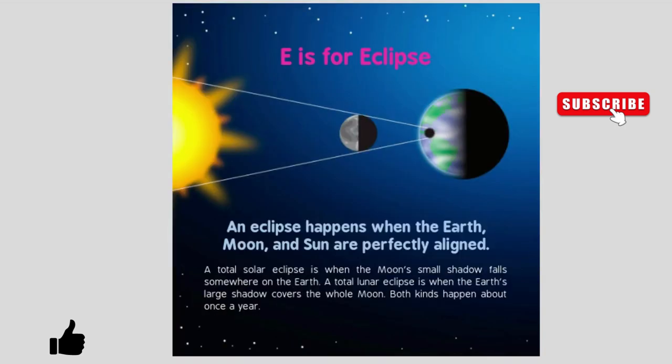E is for eclipse. An eclipse happens when the Earth, Moon, and Sun are perfectly aligned. A total solar eclipse is when the Moon's small shadow falls somewhere on the Earth. A total lunar eclipse is when the Earth's large shadow covers the whole Moon. Both kinds happen about once a year.